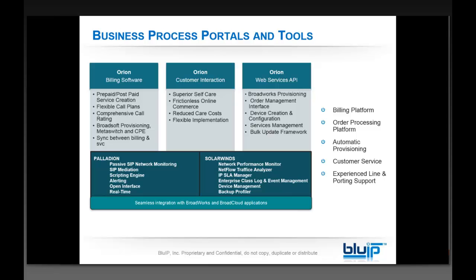Once you choose a good product and carrier, have the sales material and support, and start closing business — now you have to process the business. You need to place orders, add additional orders, take seats away, configure number portability, order toll-free numbers, and bill customers. We have designed all of that business process side very well. We have automated pretty much everything we could automate from an order processing and billing standpoint.